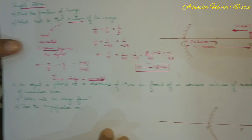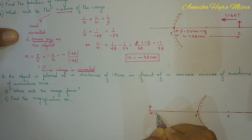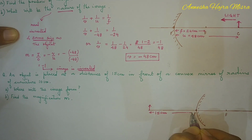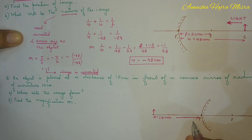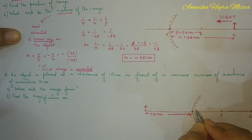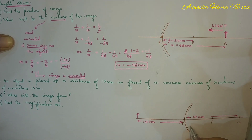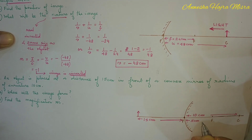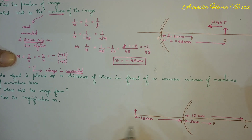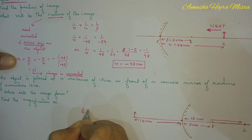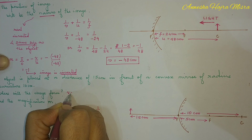Now the next problem: an object is placed at a distance of 15 cm from a convex mirror with a radius of curvature of 10 cm. Since the radius of curvature is 10 cm, the focal length is 5 cm. Using the mirror formula 1/V + 1/U = 1/F, we need to find V.